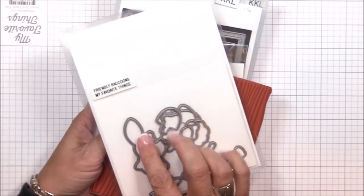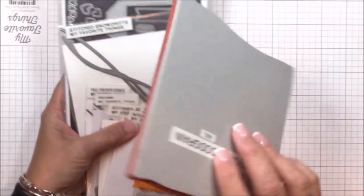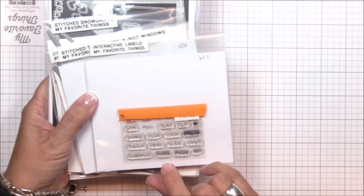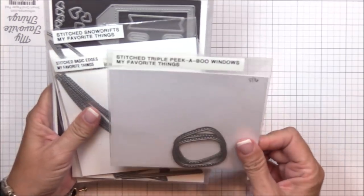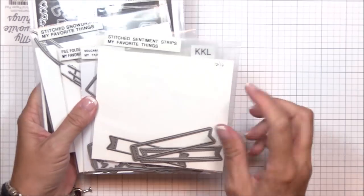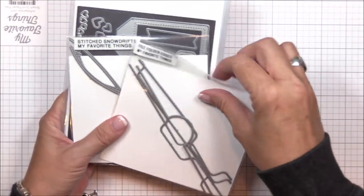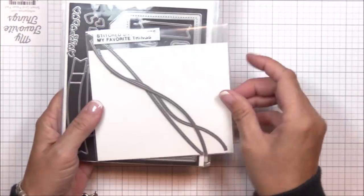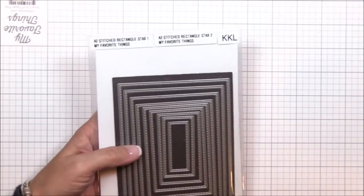To demonstrate how these dies work, I've created a fun project featuring another new product, the Friendly Raccoon stamp set and coordinating dies. I'll also be using the Whimsical Woodgrain background stamp, the Interactive Label stamp set, the stitched triple peekaboo windows, the stitched basic edges, the stitched sentiment strips, the pull tab from the volcano dies, the notch die from the file folder edges, the stitched snowdrifts, the hearts from the Tag Builder Blueprints 5 dies, and the A2 stitched rectangle stacks set 2 dies.